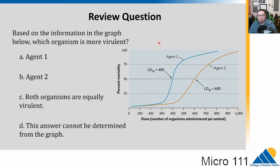We have a graph here showing virulence. Based on the information in the graph below, which organism is more virulent? We have agent 1, that's one organism, or agent 2, that's the other one.